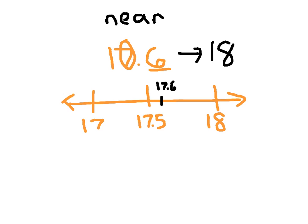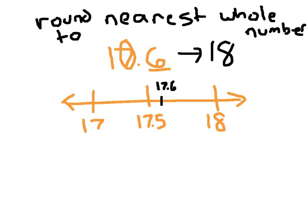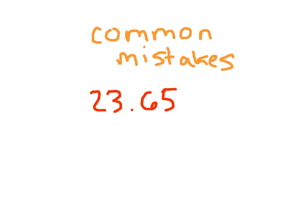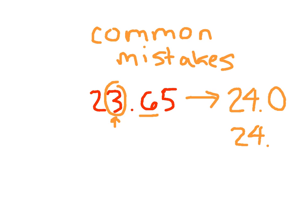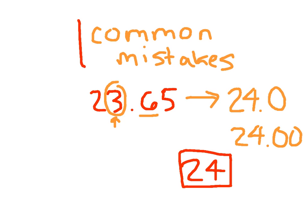That's the nearest whole number. Please don't make the common mistakes. One common mistake I see is people do not choose the 1's place when rounding — they would choose a place like the 10's place. That's why we circle the 3 and underline the 6. The other common mistake is people will write 24.0 or 24.00 as their answer. These are not whole numbers because they have a decimal place. The proper number to write is 24.